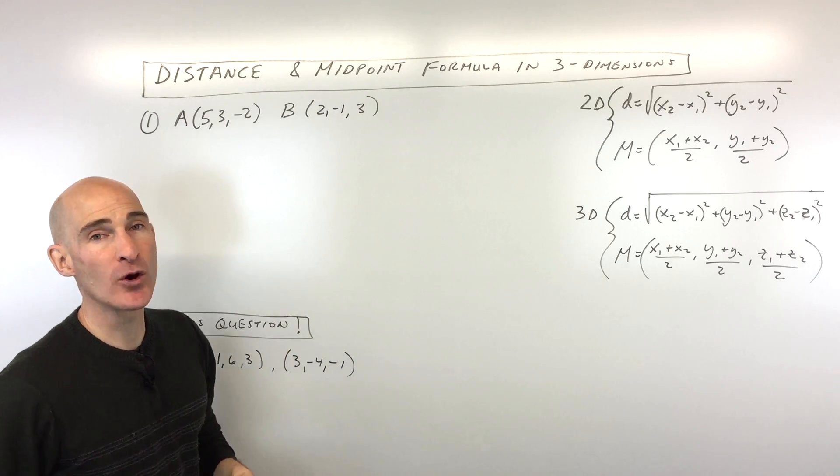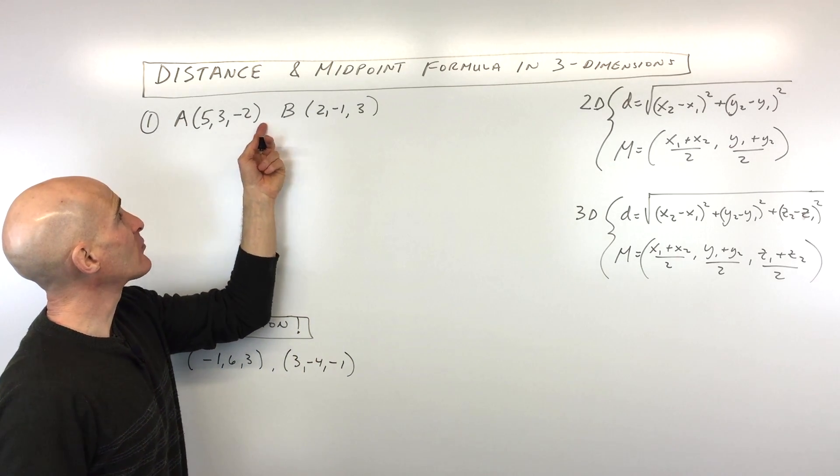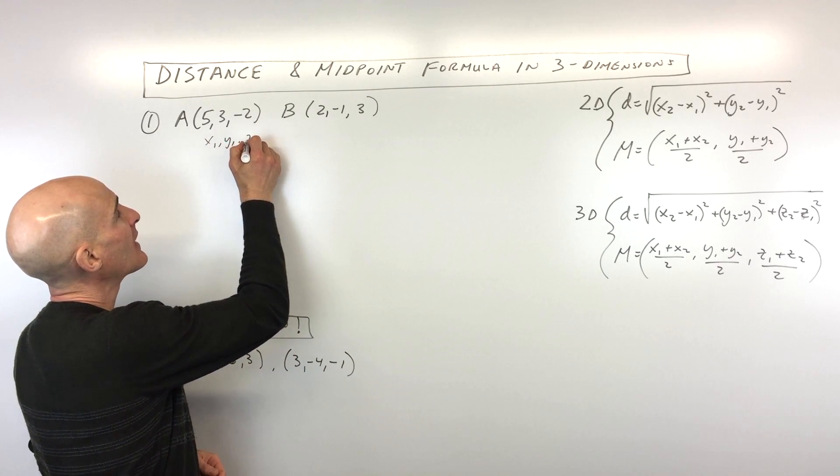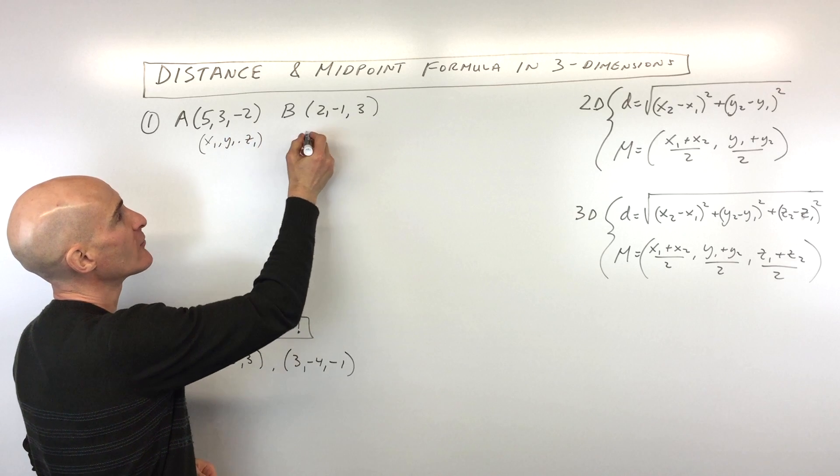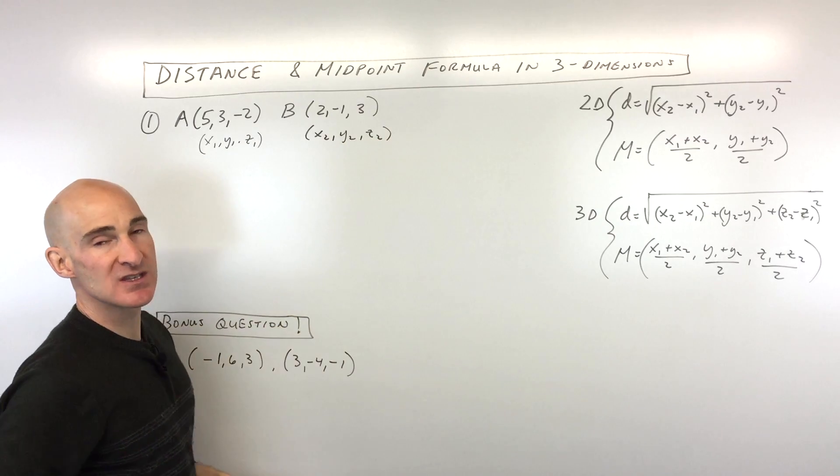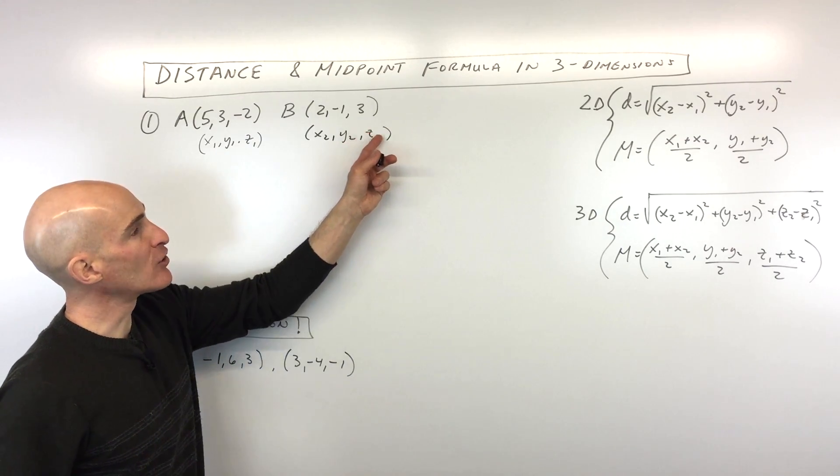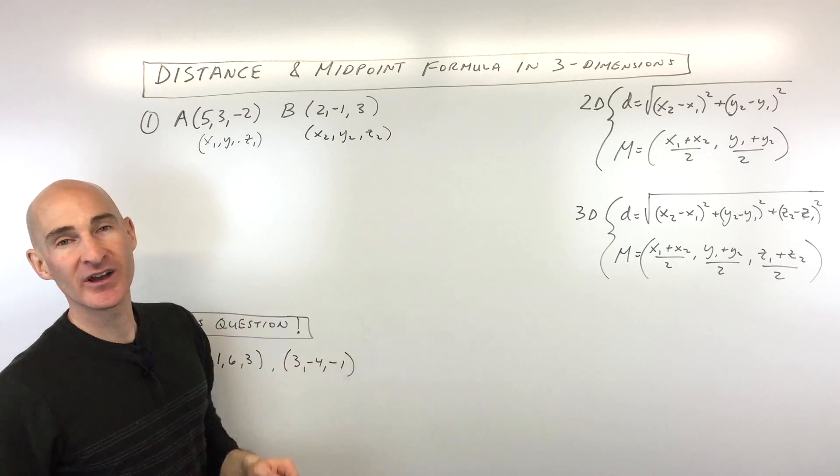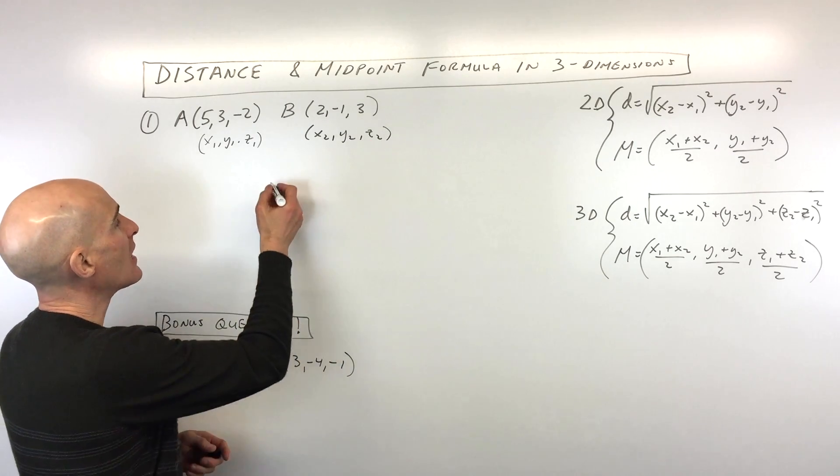So let's go through example number one. Here you can see they're giving us (5, 3, -2), and you can think of this as x1, y1, z1, just in alphabetical order. And then this is like x2, y2, z2. The two just means point number two. The z, I put a little line through it just to differentiate it from the number two, because sometimes z does look like two. So let's do the distance formula first.